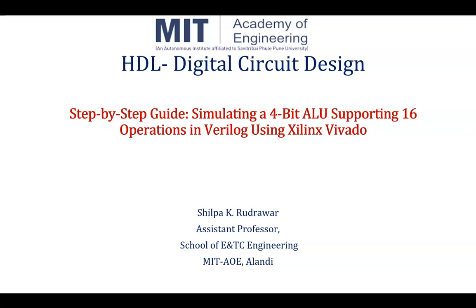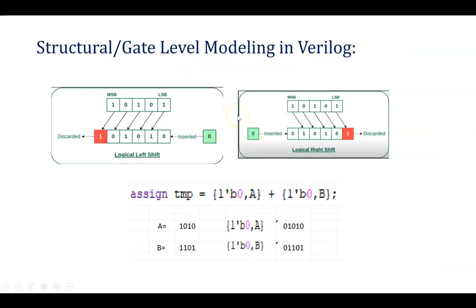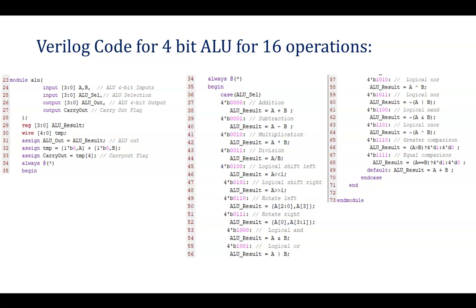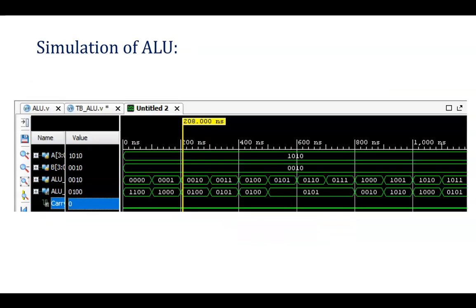In the previous section we have seen how to write a code for a 4-bit ALU supporting 16 operations and a test bench for it. Now we will be moving ahead to the simulation part using Xilinx Vivado tool. We covered what is ALU, what operations it supports, and that it performs operations on 4-bit operands A and B. The Verilog code and test bench were discussed in previous videos — the link will be shared in the description box. This is the simulation waveform we will be getting in the Vivado tool, so we will be moving ahead with the tool.